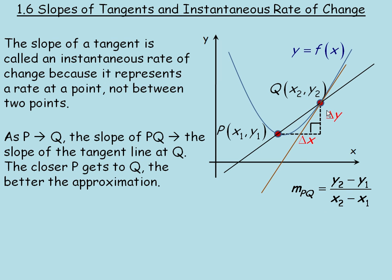Now, instead in this lesson, we're talking about how the graph is changing at a single point — how it's changing at just the point Q, how quickly Y changes with respect to changes in X. Notice that the tangent only touches the curve at a single point Q, so there aren't two different points we can use in the slope calculation.